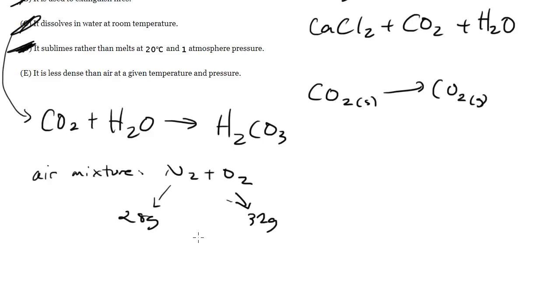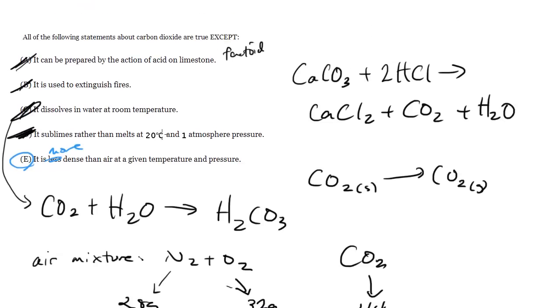And the heavier the gas is, molar mass speaking, the more dense it's going to be. And now carbon dioxide has got a molar mass of 44 grams per mole. So this means that at any condition, when you've got some mixture of nitrogen, oxygen, and carbon dioxide, these two are going to be less dense than this guy. So actually this is false because it's more dense than air. So the answer to that one is E.